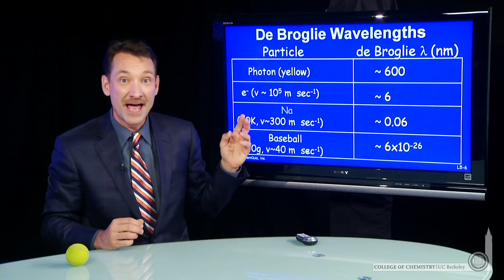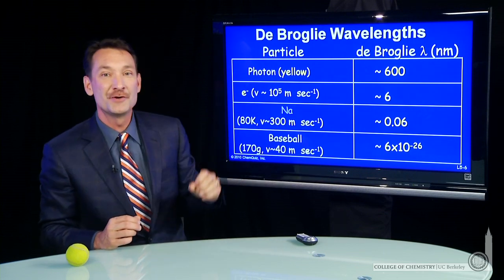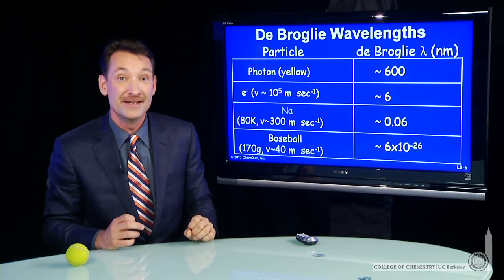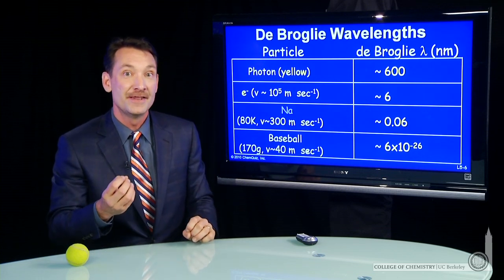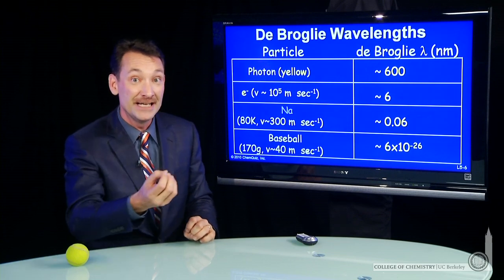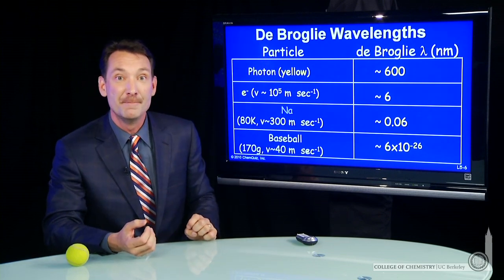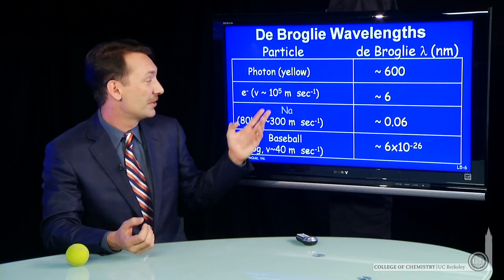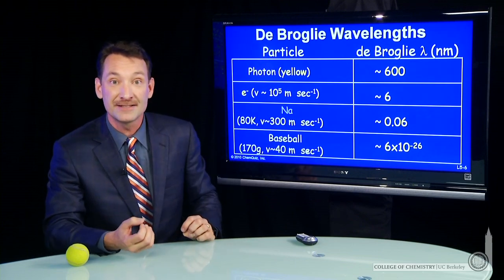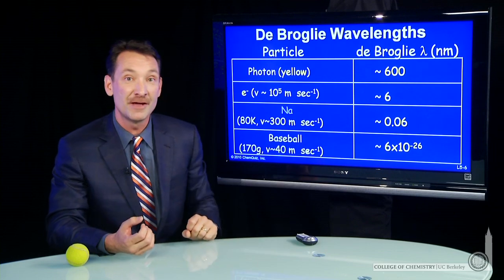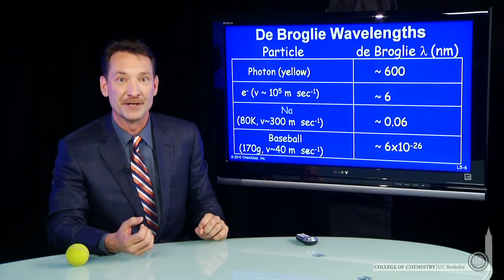A sodium atom at 80 Kelvin. That's a temperature that determines the average speed in the system. The average speed of those particles around 300 meters per second. We know they're sodium atoms, so we know their mass. They have a momentum. I can calculate a wavelength, a few hundredths of a nanometer.